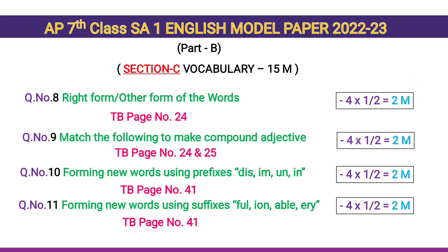Part B, Section C — Vocabulary, 15 marks. Question number 8 — choose the right form or other form of the words — 4 questions, 4 × ½ = 2 marks. This is from textbook page number 24. Question number 9 — match the following to make compound adjectives — 4 questions, 4 × ½ = 2 marks.